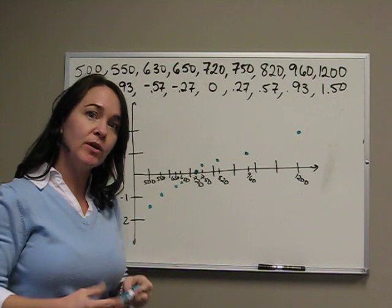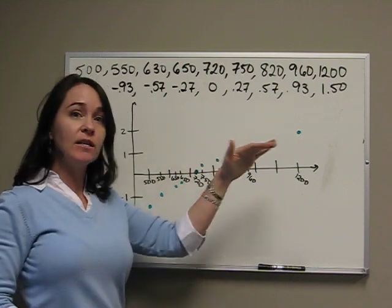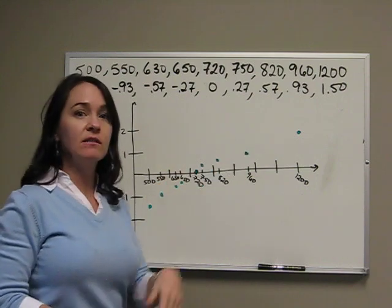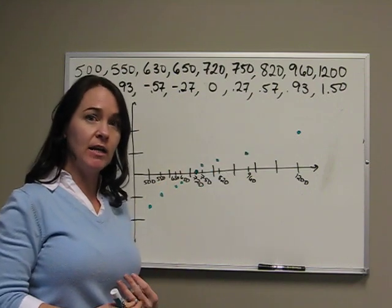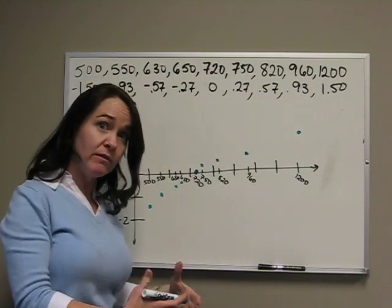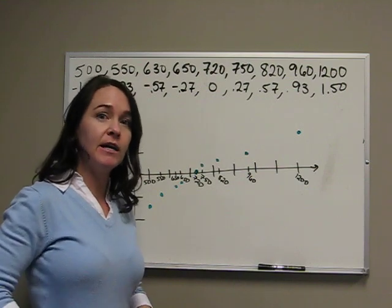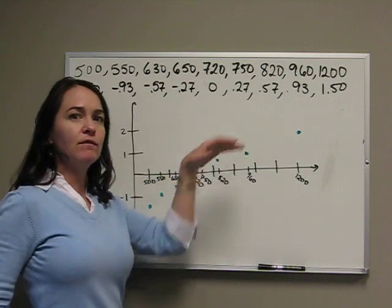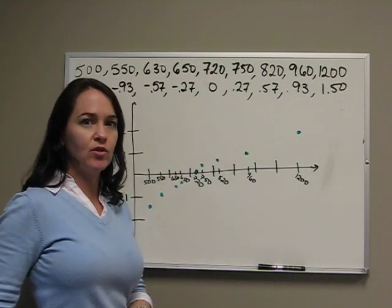Now with our data, what we're trying to see is if those dots make somewhat of a line. If we connected the dots, does it make somewhat of a line? If it makes an approximate line, then we can say our data is approximately normally distributed. If it makes a curve, then we cannot say it's normally distributed.